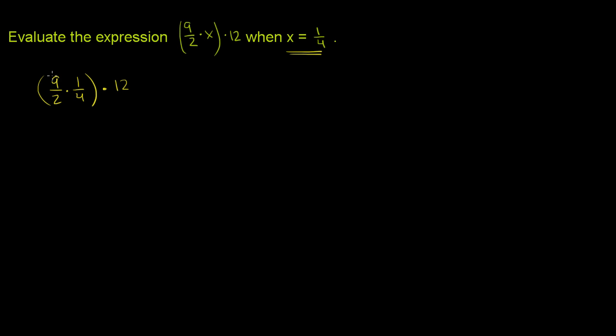Now we could just evaluate this, multiply 9 halves times 1 fourth, and then multiply that by 12. But a slightly faster way, or a way that will maybe reduce the chances for errors, would be to reassociate this.